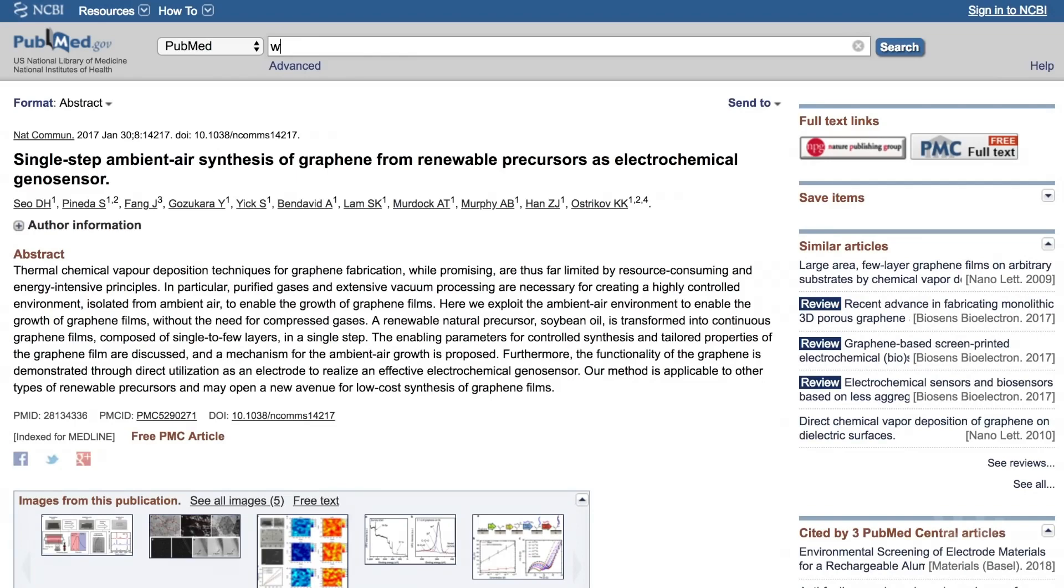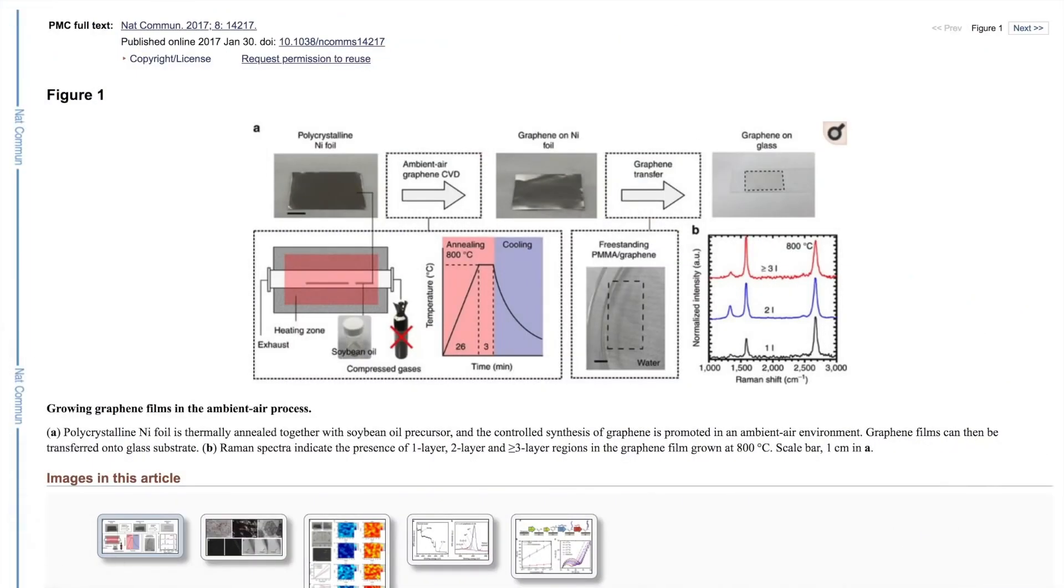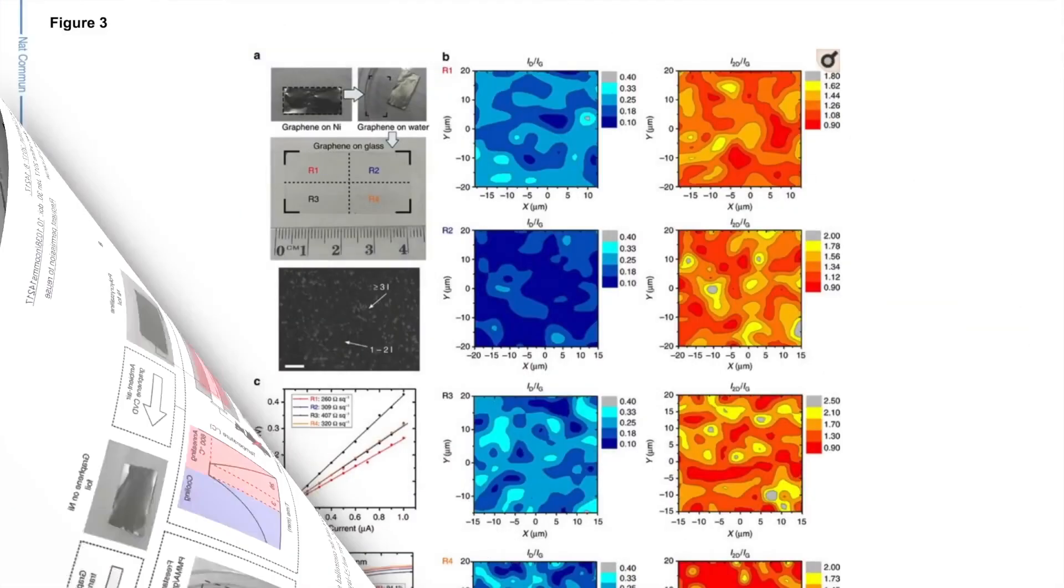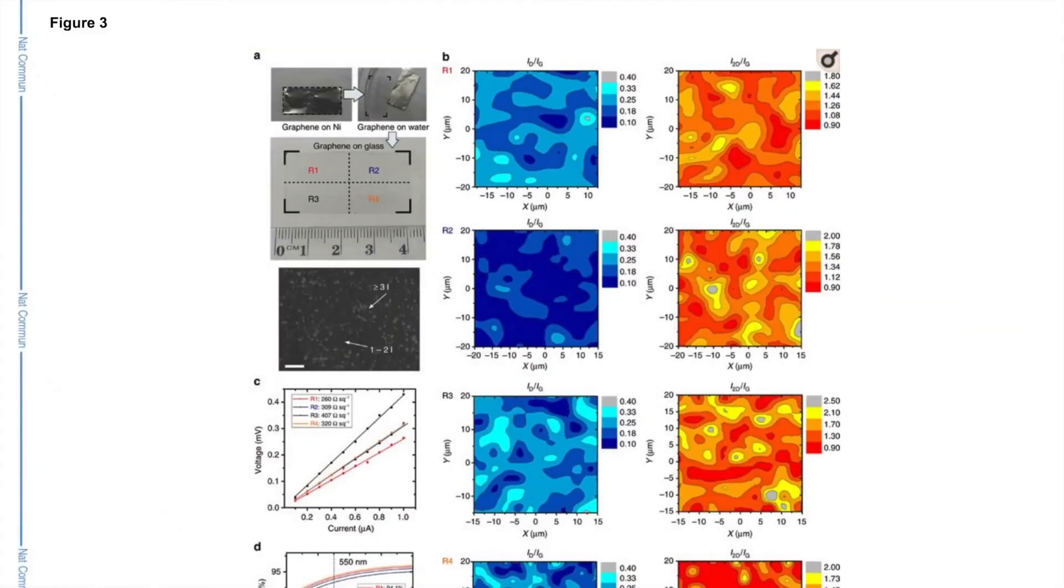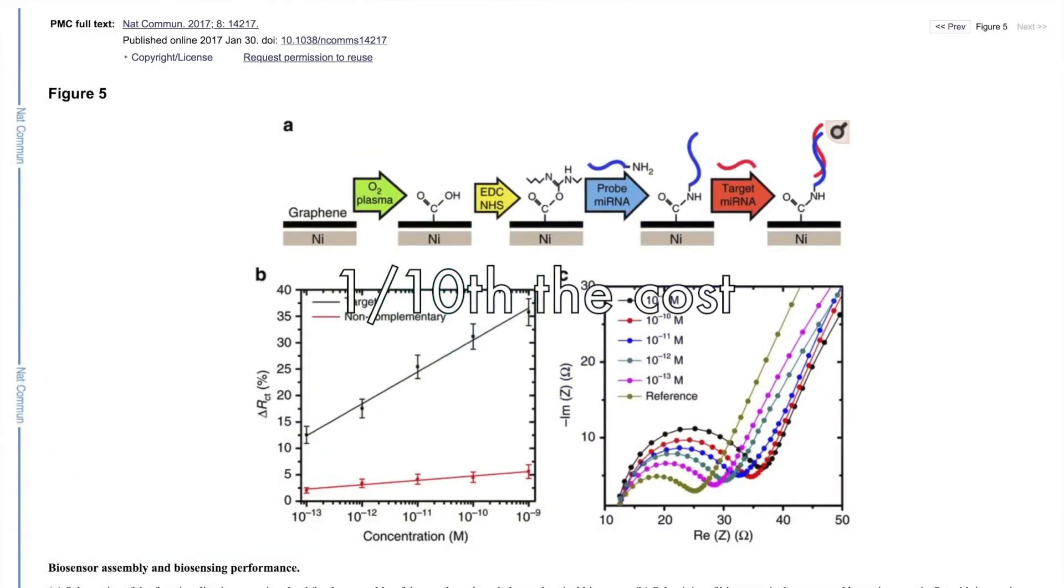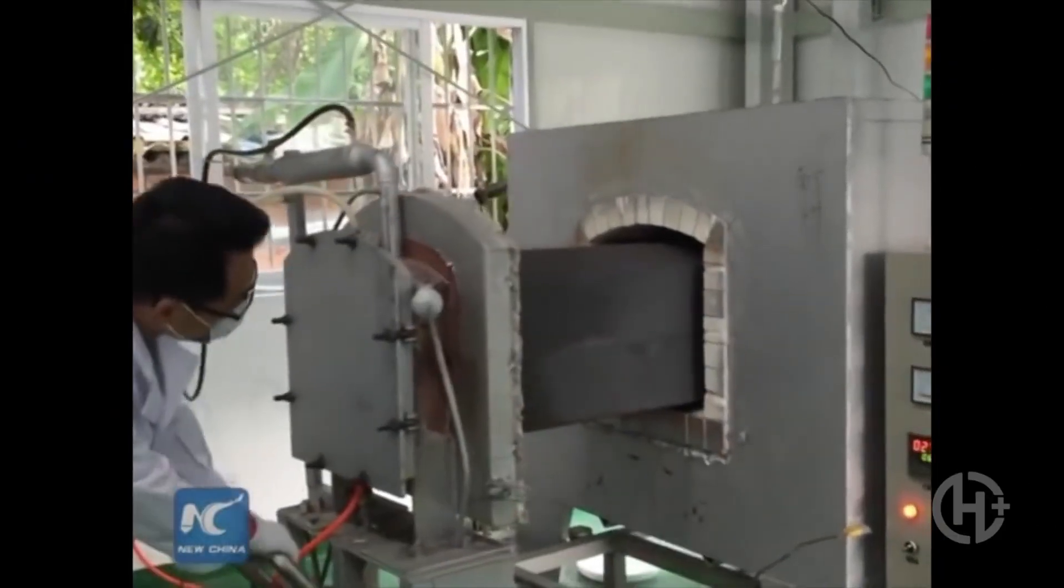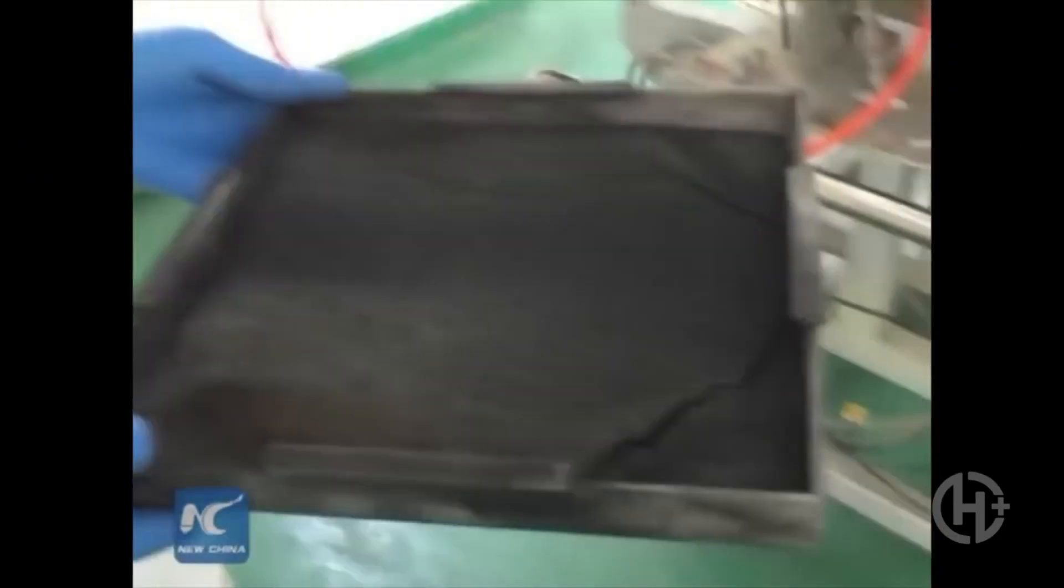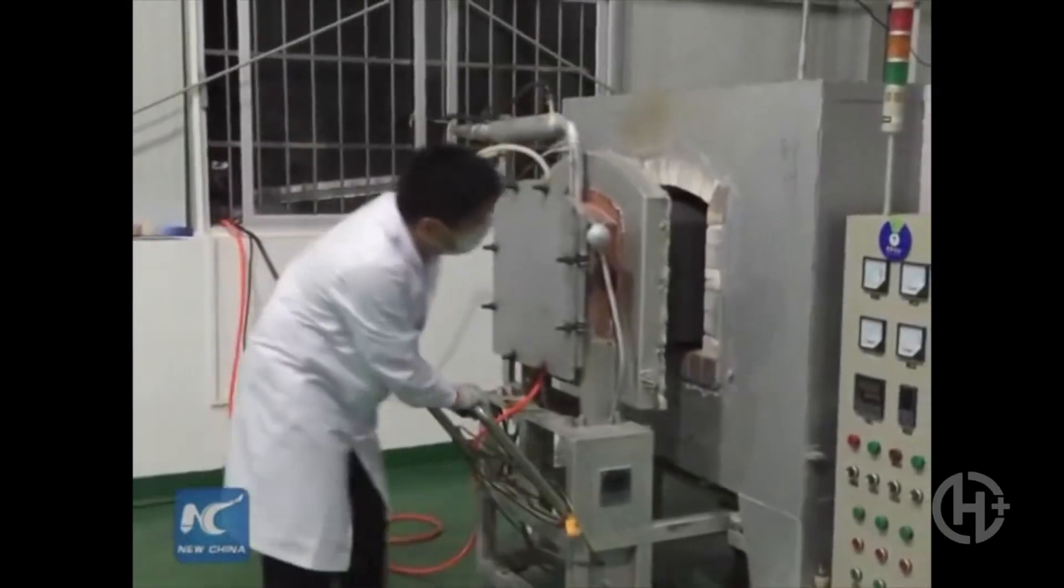In fact, another study, published in the journal Nature Communications, describes an even simpler process where we heat soybean oil to 800 degrees Celsius on a nickel foil, causing carbon atoms to arrange into a one-atom thick sheet, and cutting the production costs of chemical vapor deposition almost tenfold. But this process still has a ways to go. The largest graphene sheet we've created thus far was only the size of a credit card.